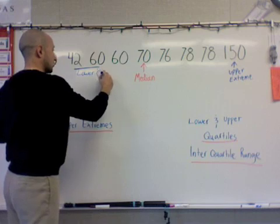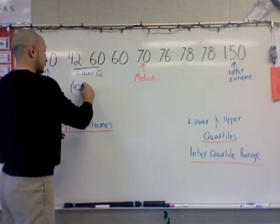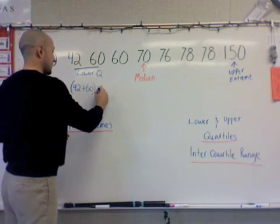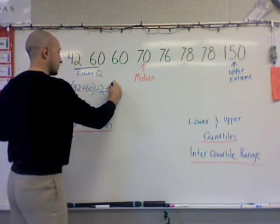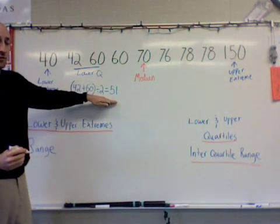So I know this is my lower quartile. I'm going to call it my lower Q. And I know I find that by adding 42 to 60, then dividing that by two. And when I do that problem, I get an answer of 51. So my lower quartile is 51.